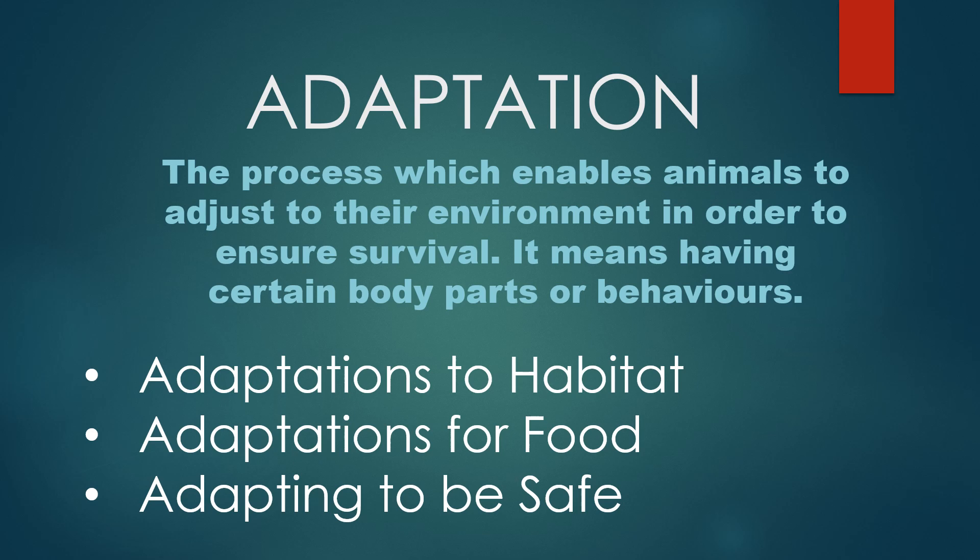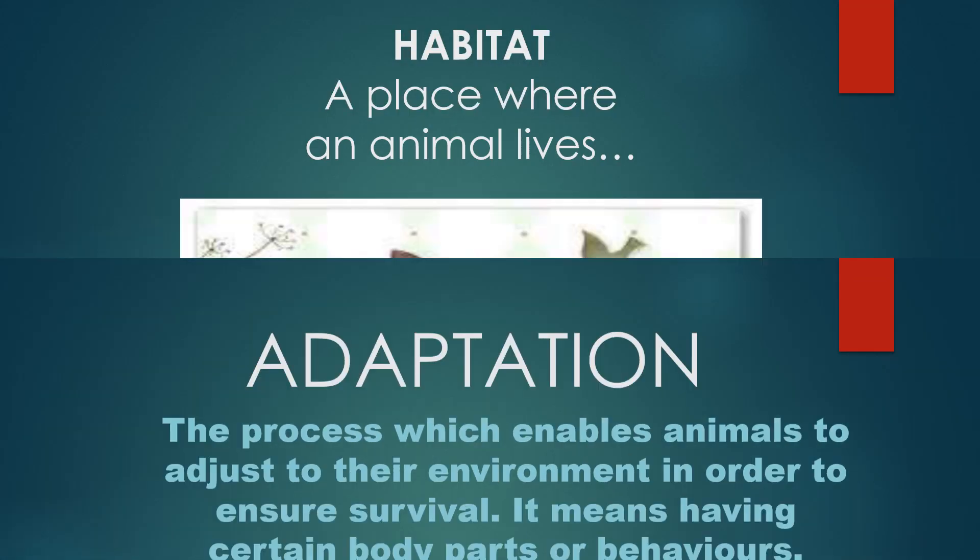In this chapter we're going to discuss three major categories: adaptations to habitat, adaptations for food, and adapting to be safe. First, we're going to discuss adaptations to habitat. It's important to understand what habitat really is.